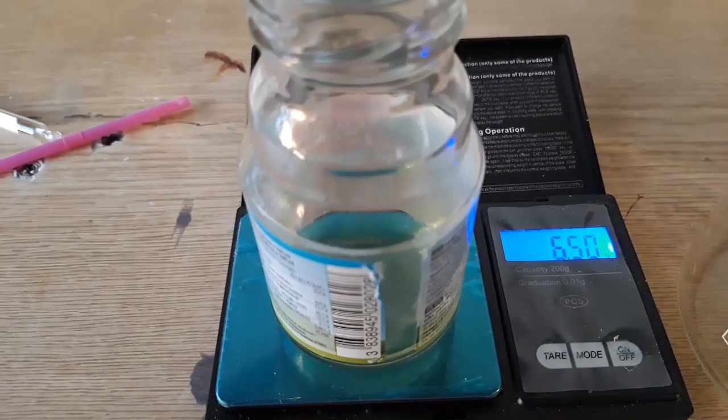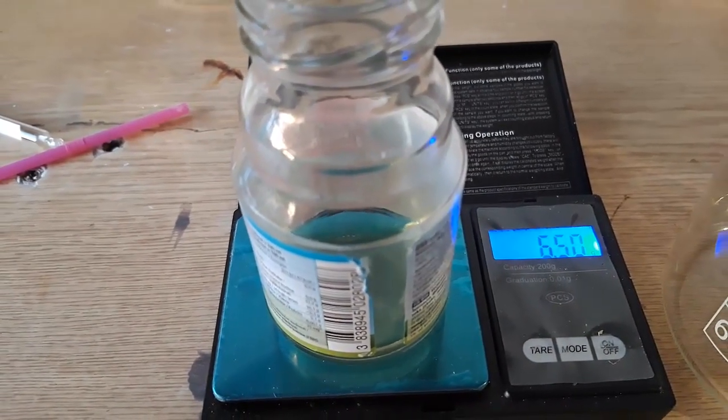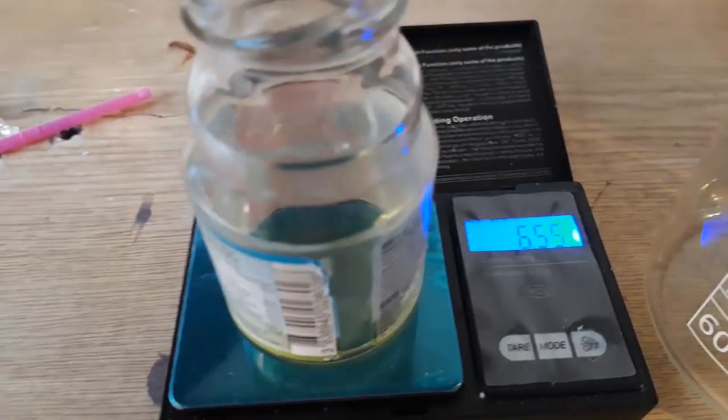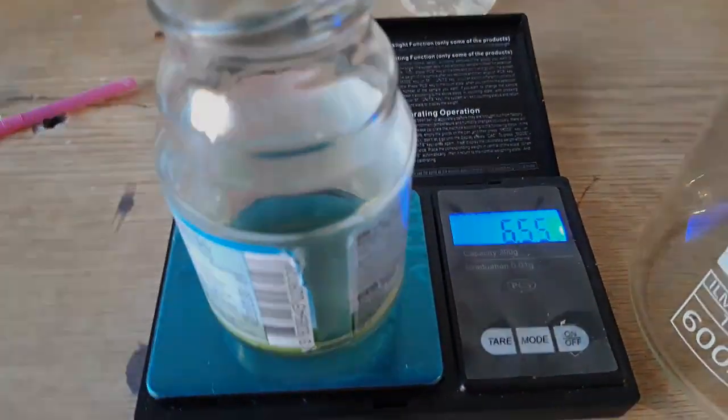We got 6.5 grams of 2-butanol nitride, which is a 65% yield based on 2-butanol. Let's do it, let's go!